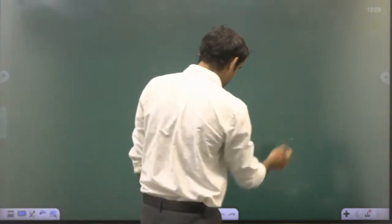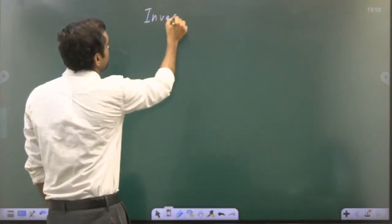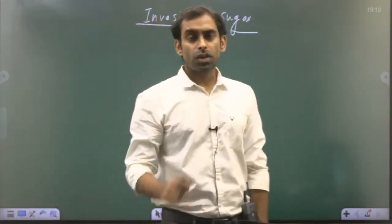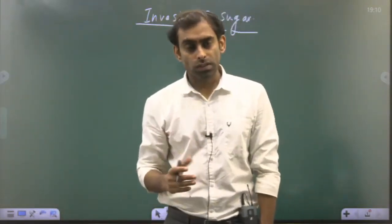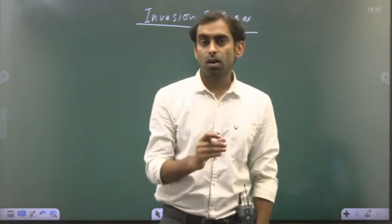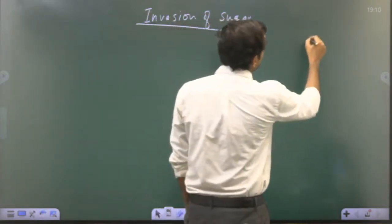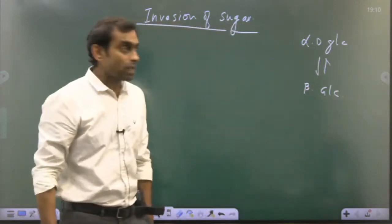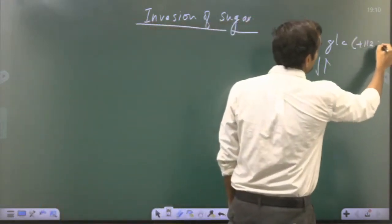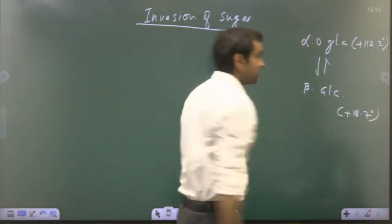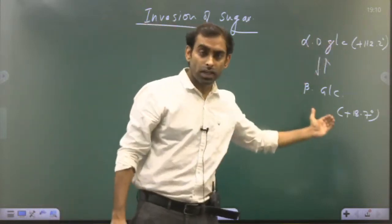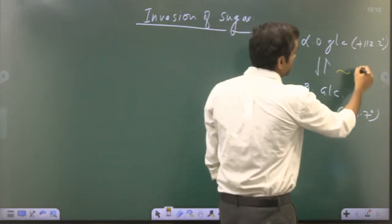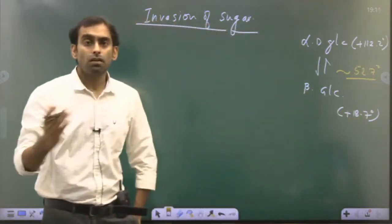We are going to study today the continuation of what we learnt yesterday, that is inversion of sugar. We have seen optical properties of glucose over the last two classes on carbohydrates. We saw how the change of alpha-D glucose to beta-D glucose leads to a change in optical rotation: alpha has +112.2 degrees and beta has +18.7 degrees. On achieving equilibrium, glucose has an optical activity of 52.7 degrees, which is called the equilibrium mixture of alpha and beta glucose.